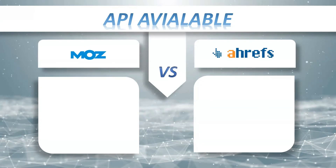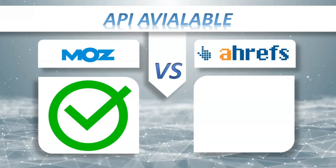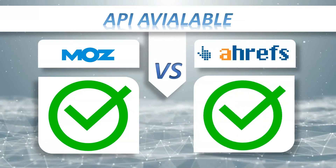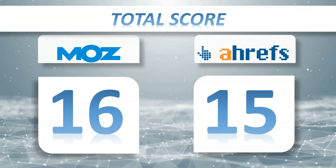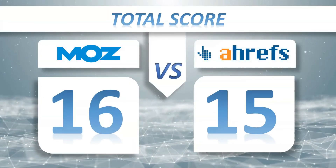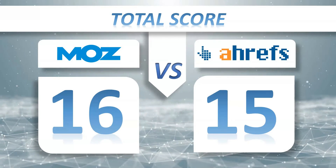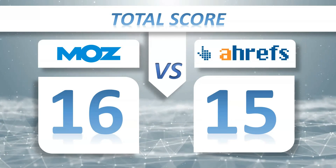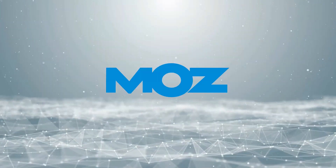API Available: Moz Pro has it, Ahrefs also has it. So the total score is Moz Pro 16, Ahrefs 15 — and the winner is Moz Pro.